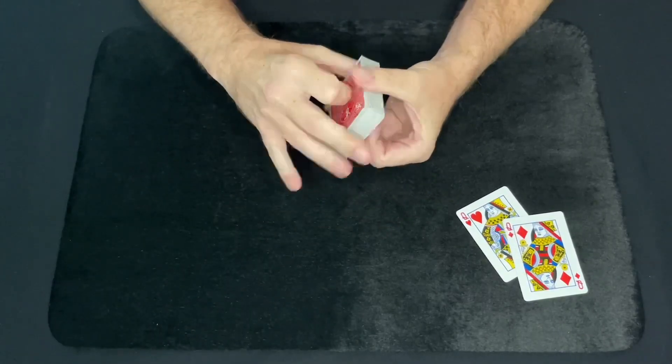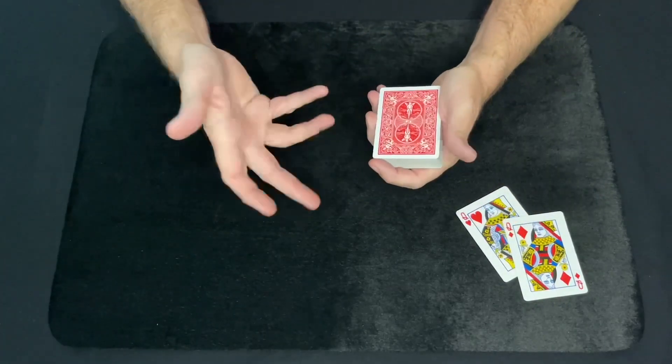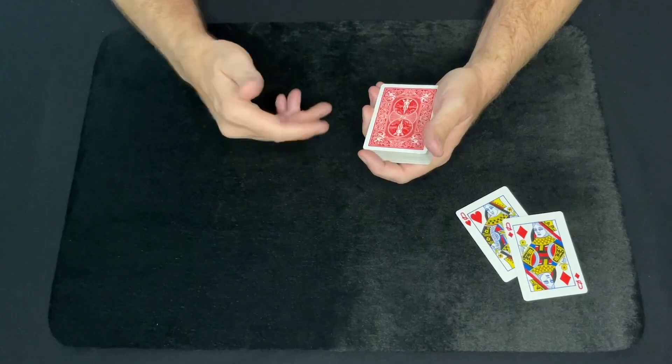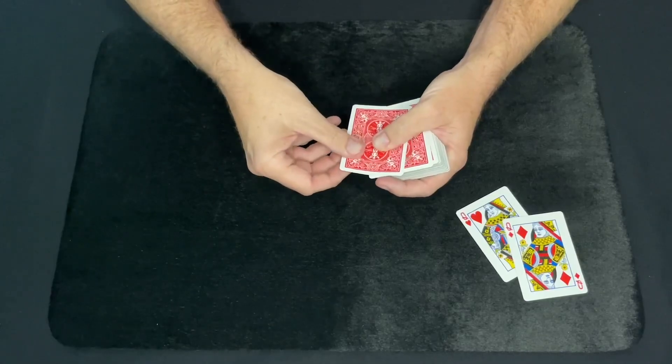Give the deck a few cuts and even a nice shuffle. Now the trick is called Between the Two Red Queens because you're going to need to find their card between the two red queens. So let's just say if their card was on the first 13 cards of this deck, we could easily find it by just counting out 13 cards.